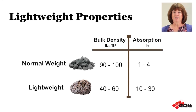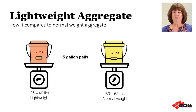So far we've been talking about regular, normal weight aggregates. By normal weight, we just mean typical rocks and stones that are fairly heavy — with bulk densities of 90 to 100 pounds per cubic foot, and lower absorption values ranging from less than 1% up to maybe 3 or 4%. Now let's talk about lightweight aggregates. These are light compared to normal weight aggregates, with much lower bulk densities of 40 to 60 pounds per cubic foot and corresponding higher absorption values of 10 to over 30%. A 5-gallon bucket of lightweight aggregate may weigh only 20 to 40 pounds, compared to 60 or 65 pounds for normal weight aggregates.